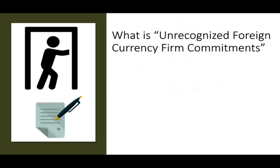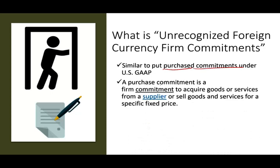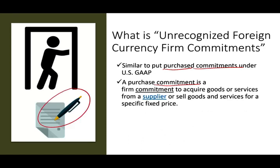So what is an unrecognized foreign currency firm commitment? It's basically the same thing as in a prior lecture, except we're going to use a put option. An unrecognized foreign currency firm commitment is very similar to a purchase commitment under US GAAP. A purchase commitment is when you make a commitment — signed or oral — that is firm. You cannot back out. It's a commitment to acquire goods or services from a supplier, or to sell goods or services, at a fixed price.